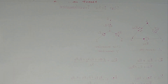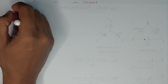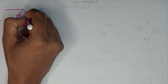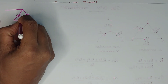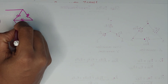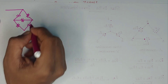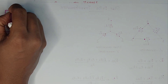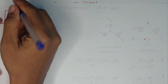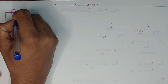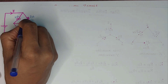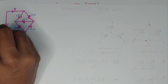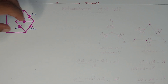So, I have a question: find the source current I in the given circuit using star-delta transformation. This is 2 ohm, this is 1 ohm, and this is 3 ohm. The source is 20V, and I is the current we need to find. Now, what I have to do is simplify this circuit.